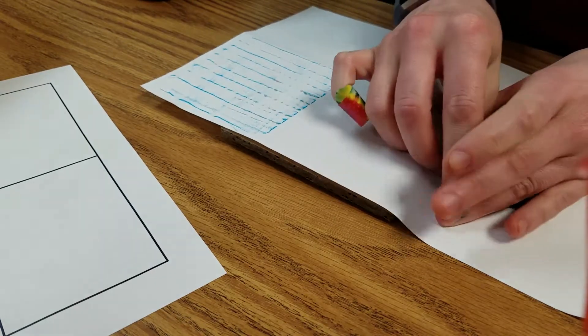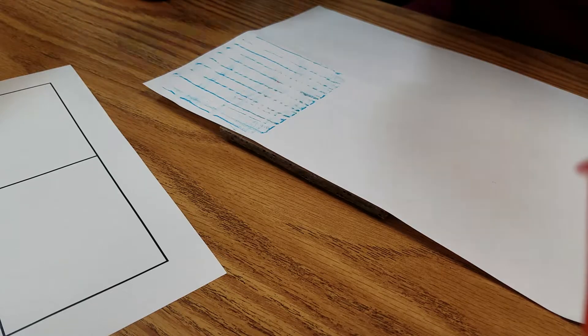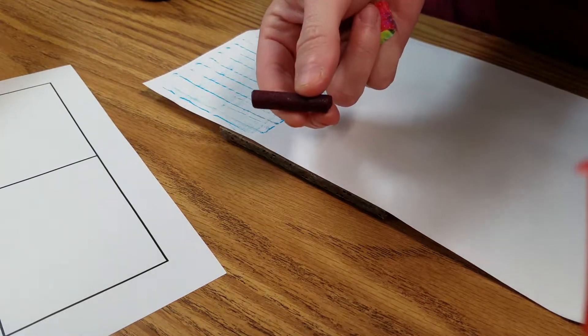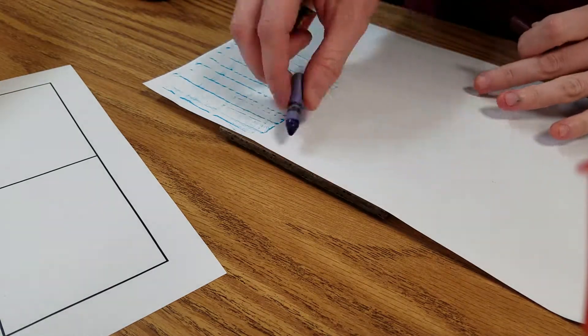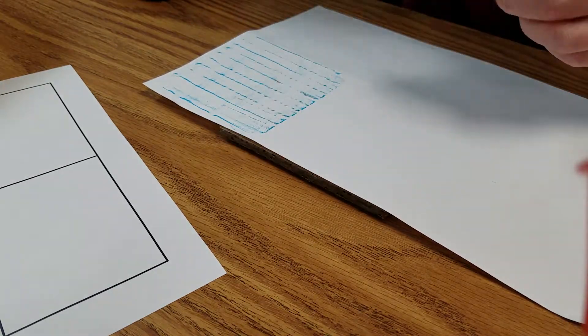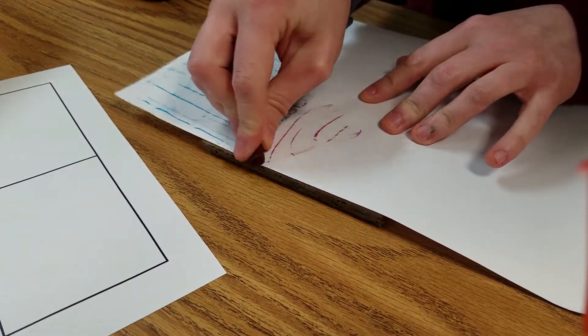Then you take whatever color you want. Now if you can find a crayon that you like that does not have a wrapper, those are better to use, but if not it's okay. You can use one with the wrapper and just color like you normally would.